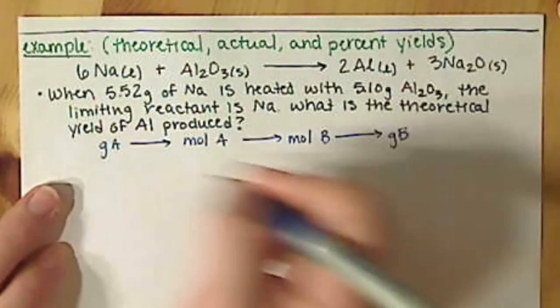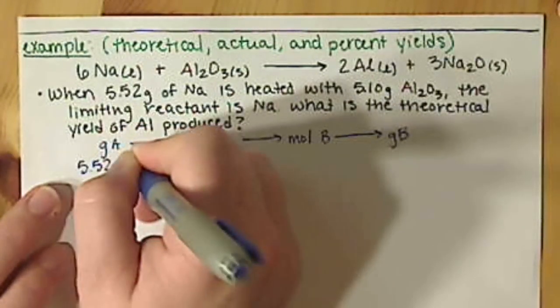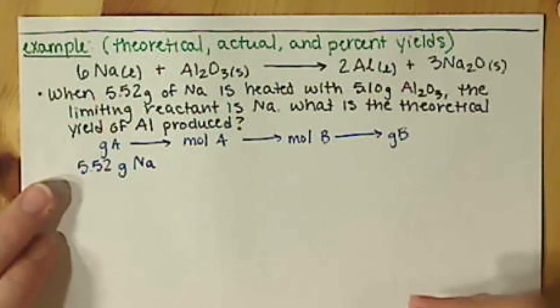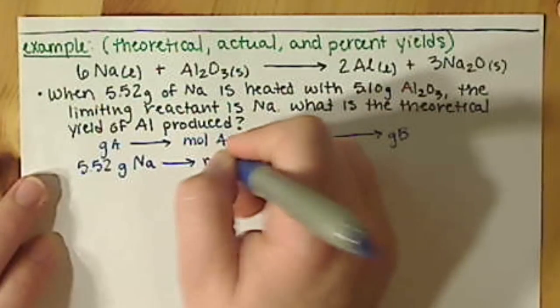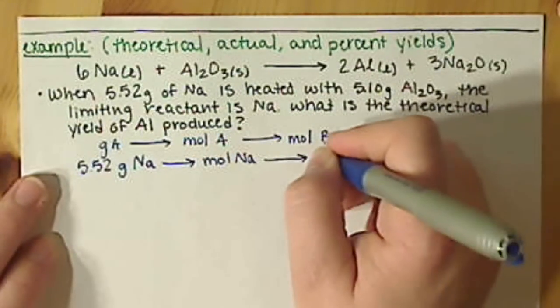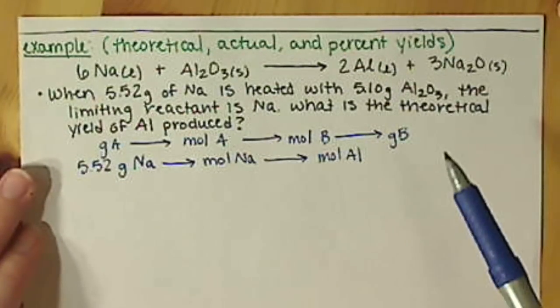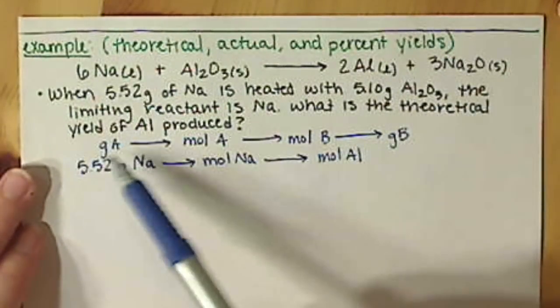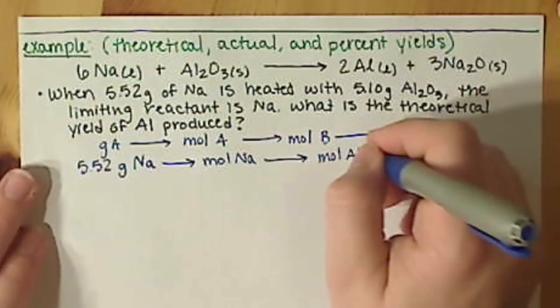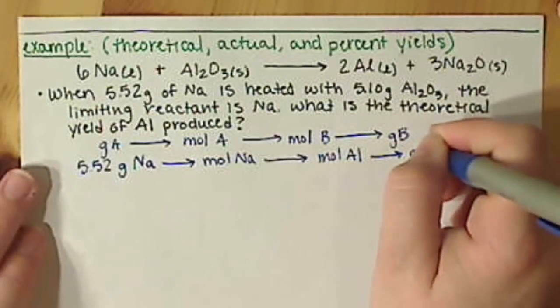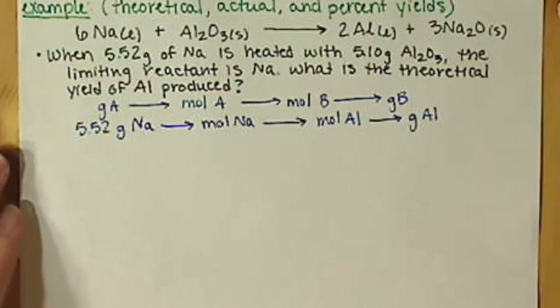We want to take our limiting reactant. So, we're going to start with our 5.52 grams of sodium. We want to convert that to moles of sodium, and then to moles of aluminum. In this case, we don't have a choice of our product, because it's actually asking for the yield of aluminum. So, to moles of aluminum, to grams of aluminum. And that is our calculation.